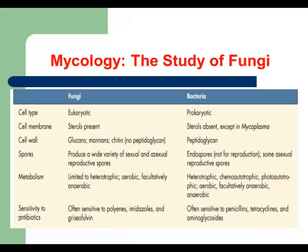The last characteristic is sensitivity to antibiotics. To treat bacterial infections we use antibacterial drugs called antibiotics — for example, penicillin, tetracycline, and aminoglycosides. Those antibacterial drugs will not work against fungal infections because fungi are eukaryotes with a different cell structure. To treat fungal infections we use antifungal drugs, such as imidazoles and griseofulvin.